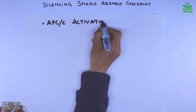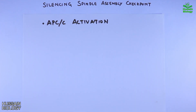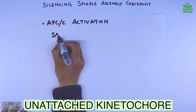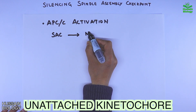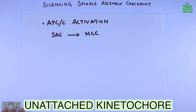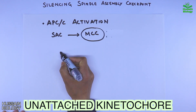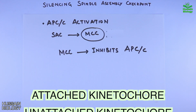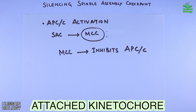In the case of silencing, we need to activate the APC, or cyclosome. We know that when we have an unattached kinetochore, the SAC — that's the spindle assembly checkpoint — activates the MCC, the mitotic checkpoint complex. This MCC then inhibits the APC, and this process is deemed the spindle assembly checkpoint.